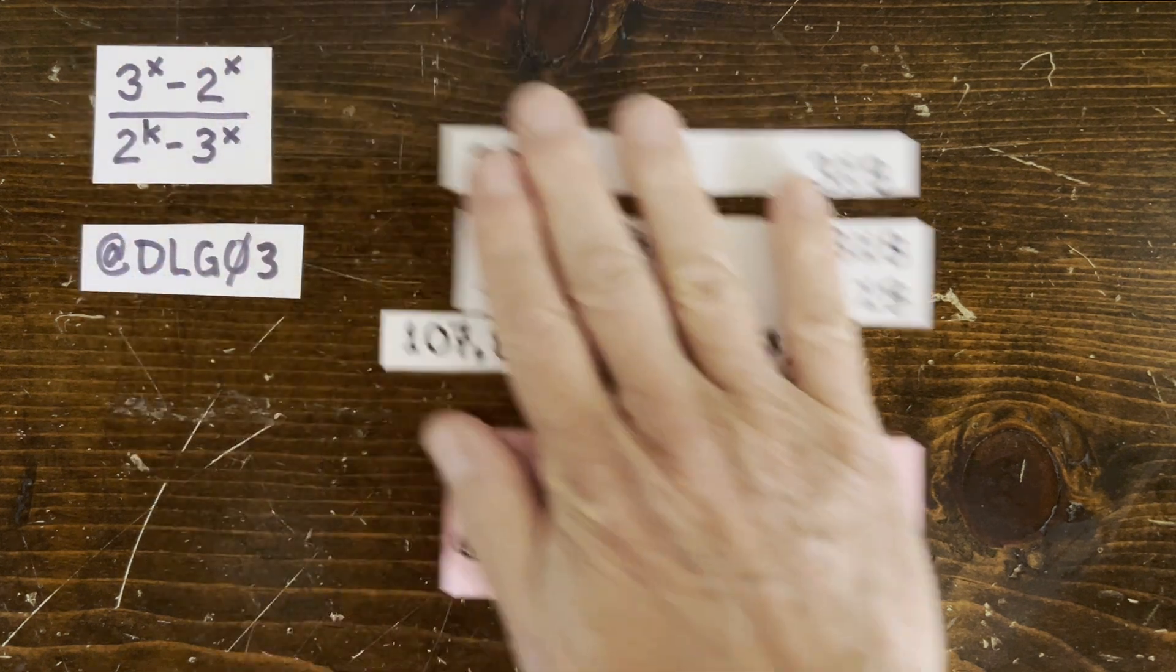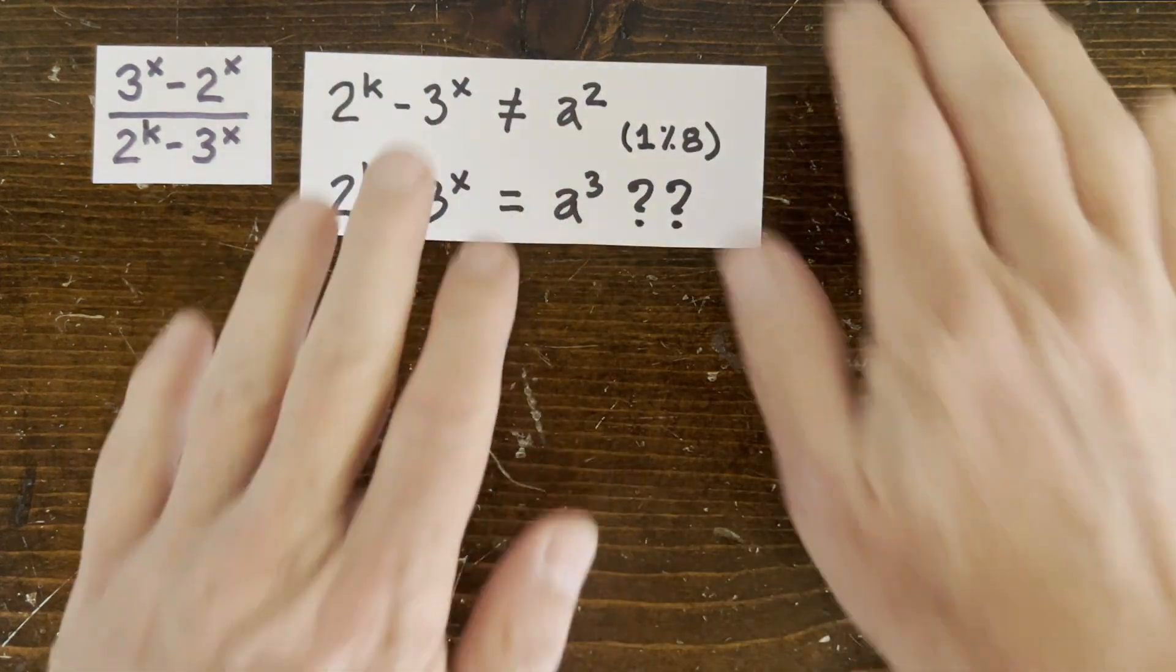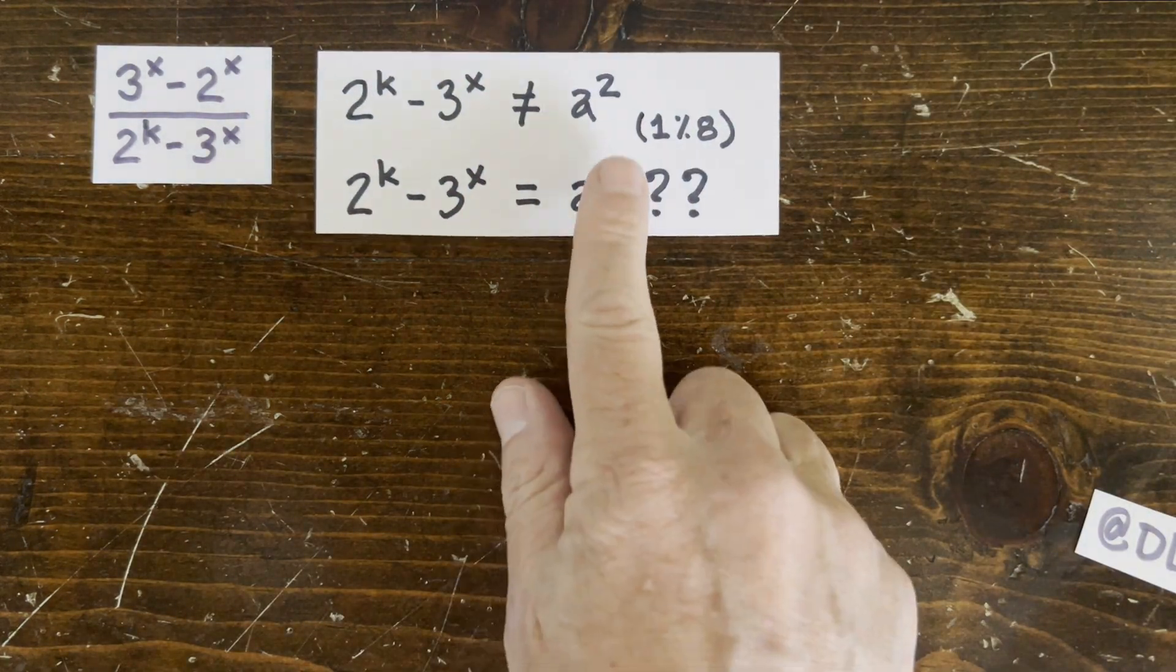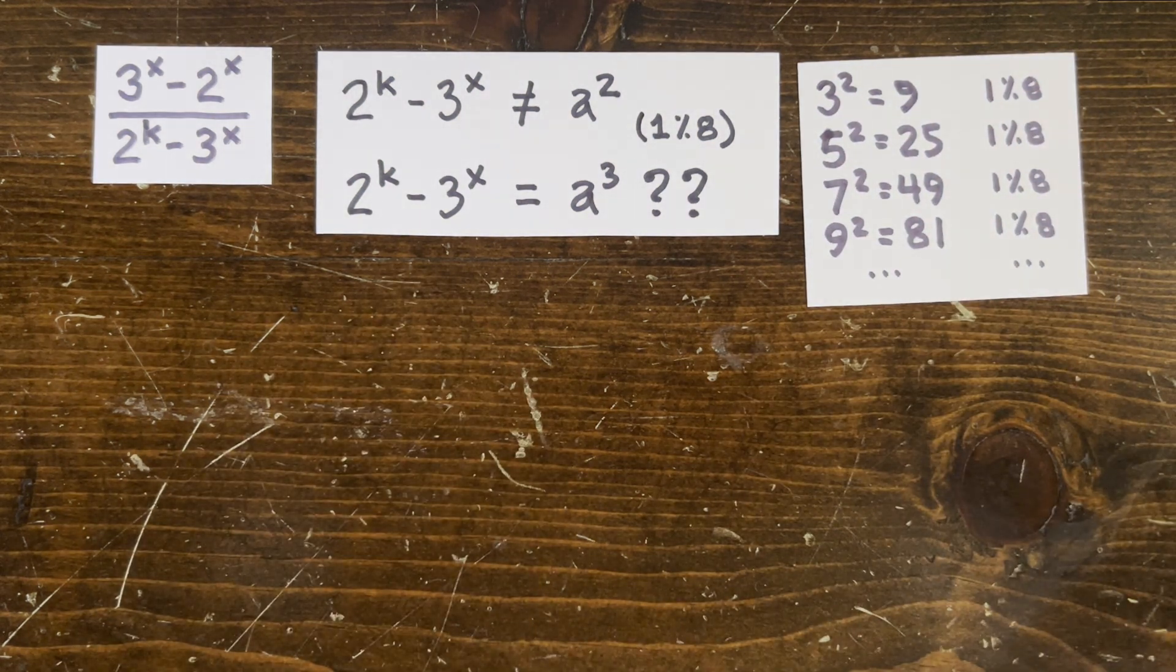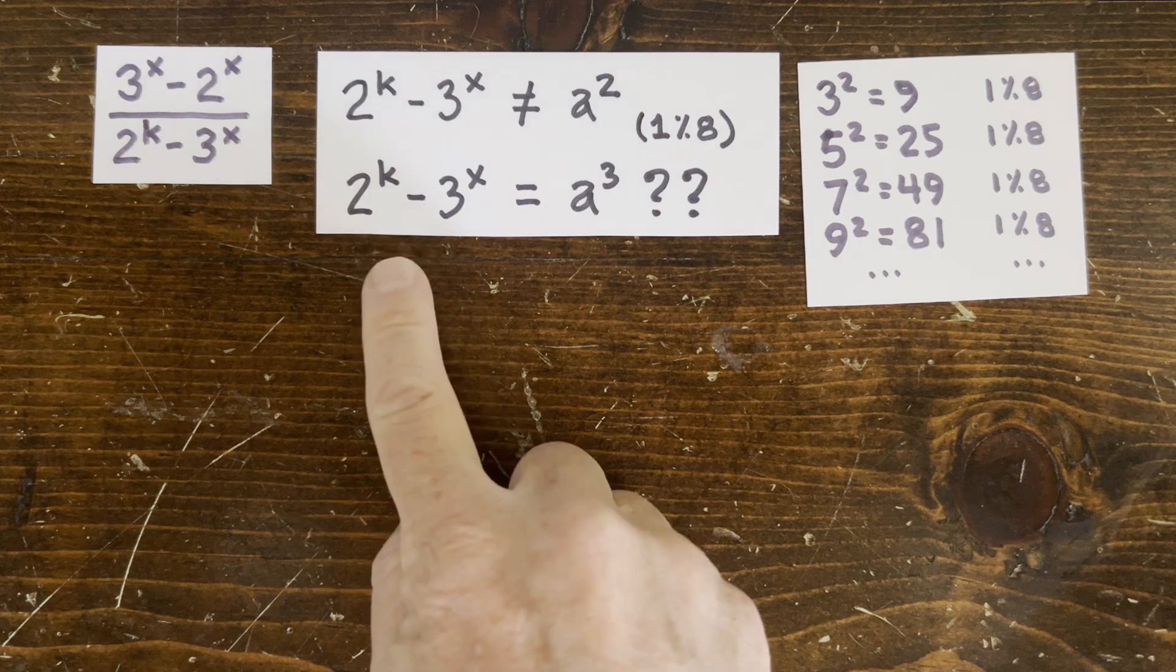Meanwhile, here's an easier thing to think about. So 2 to the k minus 3 to the x will never equal a square because every odd square is 1 mod 8. So can 2 to the k minus 3 to the x be a cube?